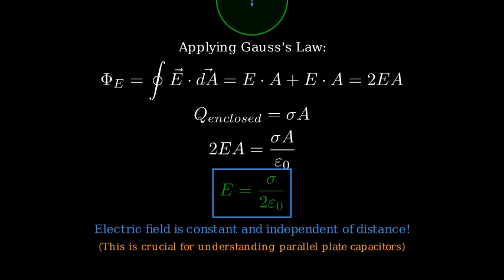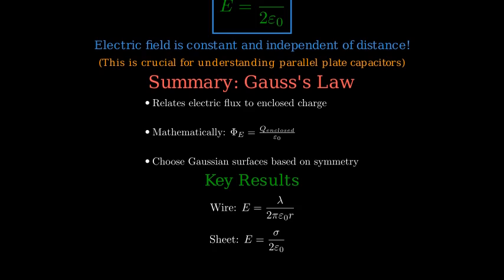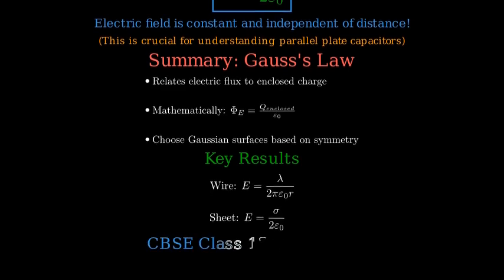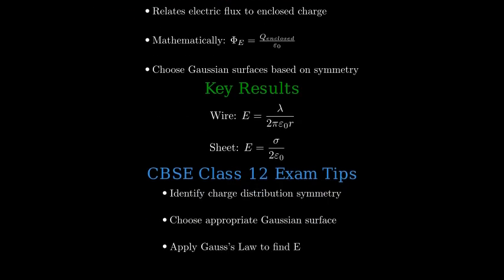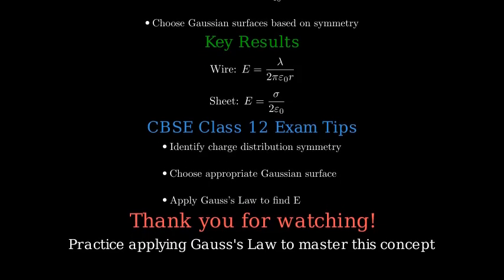Let's summarize what we've learned about Gauss's Law. First, Gauss's Law relates the electric flux through a closed surface to the enclosed charge. Second, mathematically it's expressed as Φ_E = Q_enclosed / ε₀. Third, we can choose any closed surface, but smart choices based on symmetry make calculations easier. Fourth, for an infinite wire with linear charge density λ, the electric field equals λ / (2πε₀R). Fifth, for an infinite sheet with surface charge density σ, the electric field equals σ / (2ε₀), independent of distance. For your CBSE Class 12 exams: identify the symmetry of the charge distribution, choose an appropriate Gaussian surface, and apply Gauss's Law to solve for the electric field. Thank you for watching — practice solving problems using Gauss's Law to build your confidence with this powerful concept.